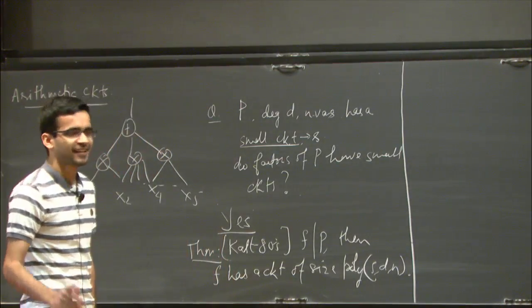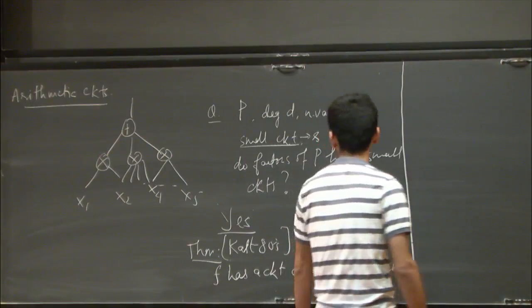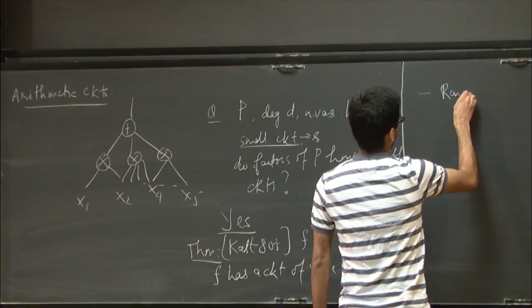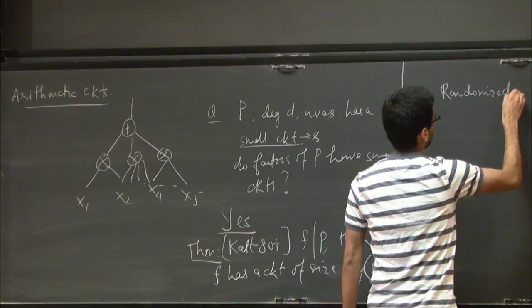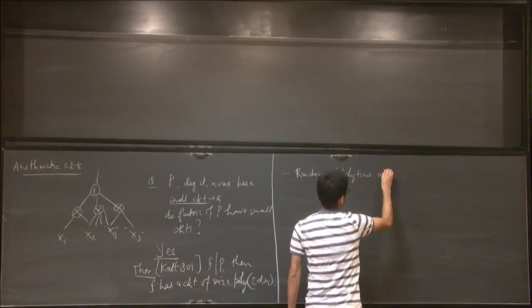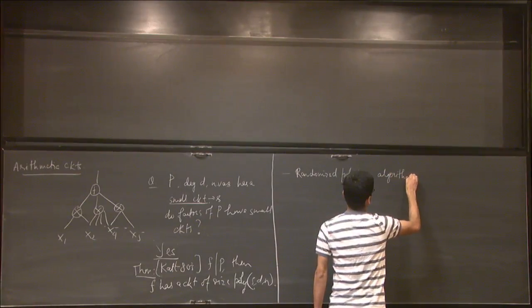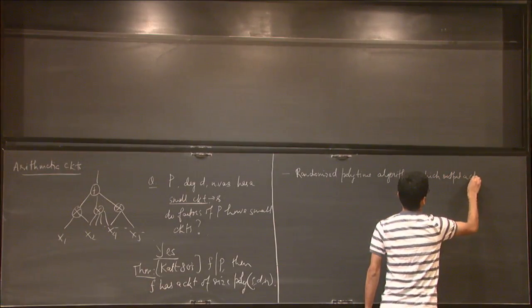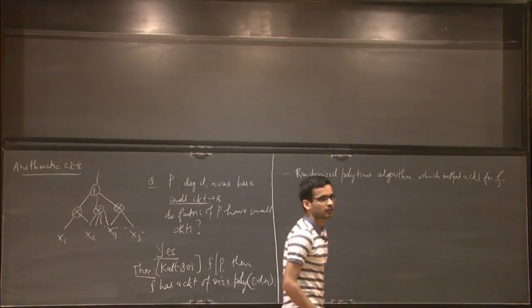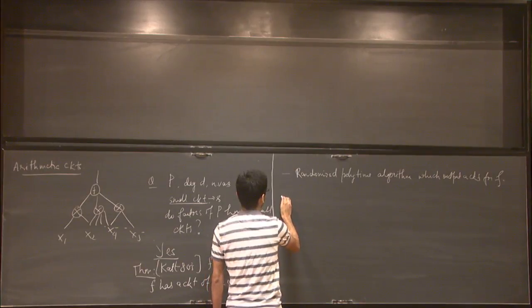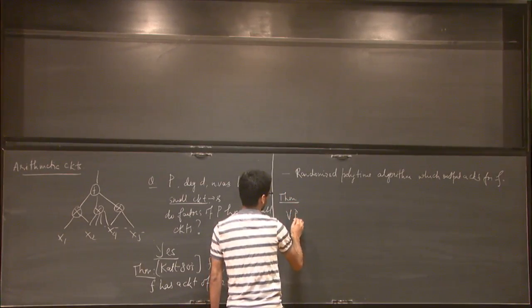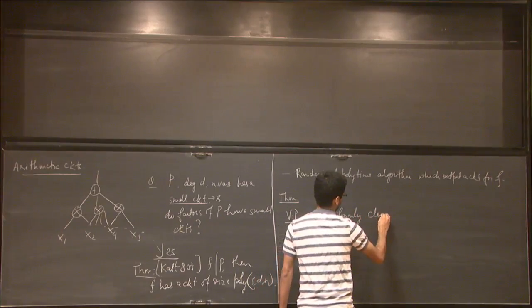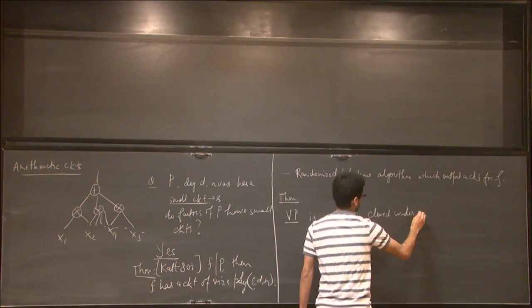Moreover, there is a randomized polynomial-time algorithm which outputs a circuit for the factor. Another way of saying this result is: the complexity class VP is uniformly closed under taking factors.